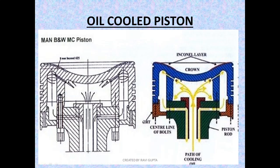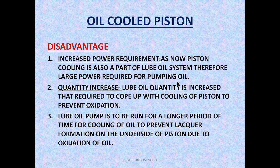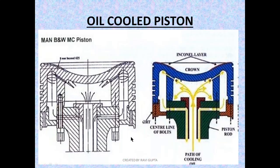For example, suppose the piston can be cooled by 1000 litres of oil, but we use 5000 litres so that the oxidation problem can be eliminated. Because it is a continuous process, if the oil is continually circulated it will heat up slowly. To cope with that heat generation, the cooling system is provided and the oil quantity is increased. Similarly, the lube oil pump needs to run for a longer period of time to cool the oil and prevent lacquer formation on the underside of the piston.